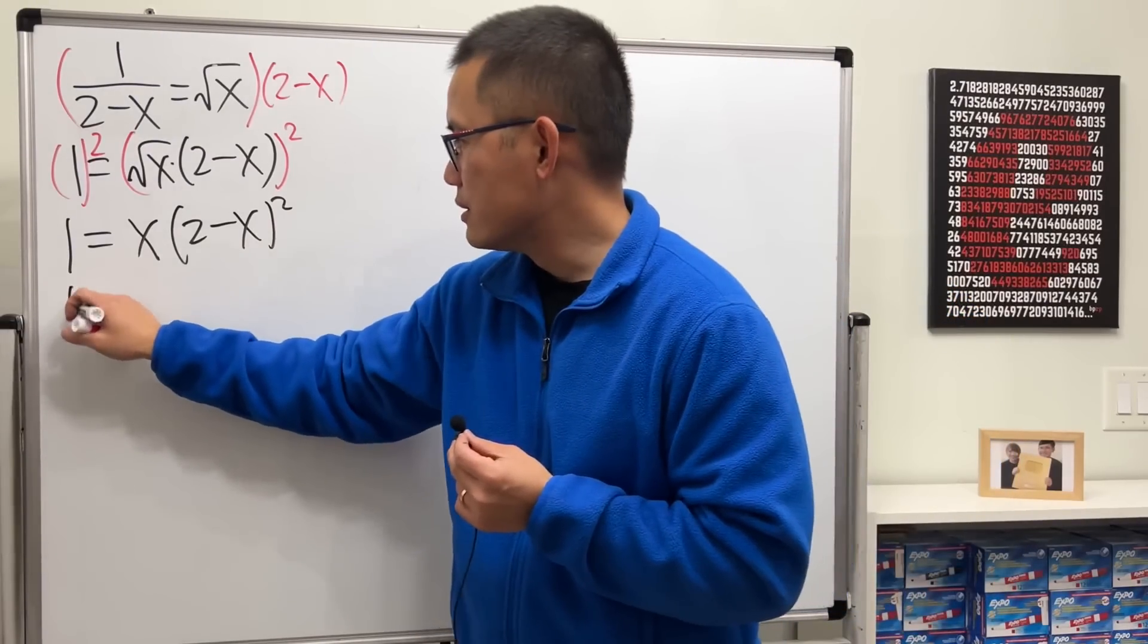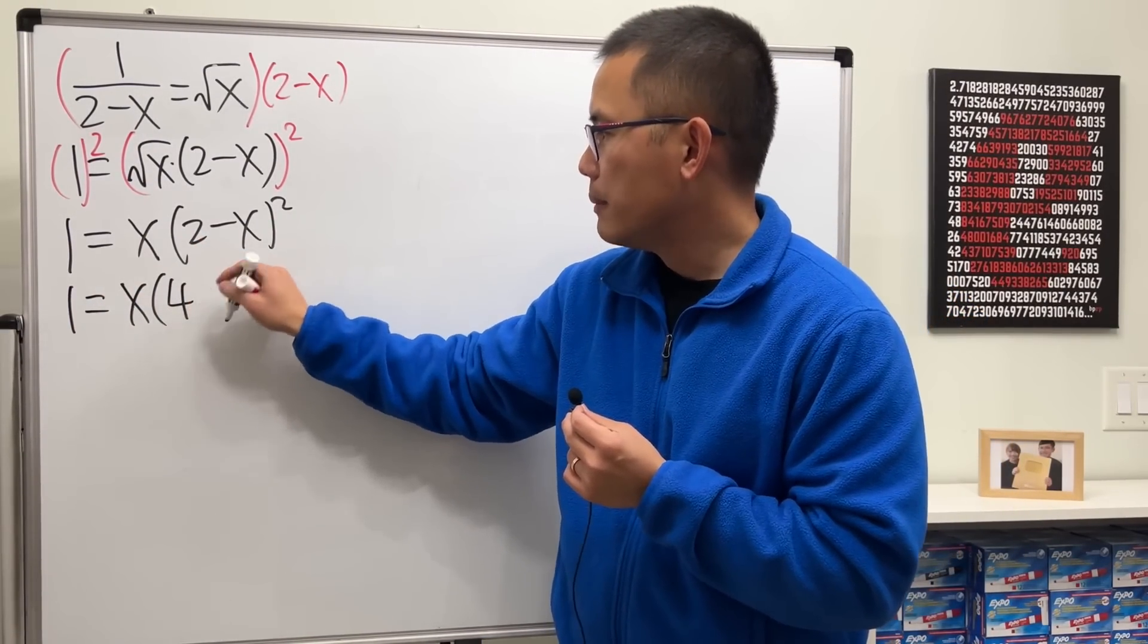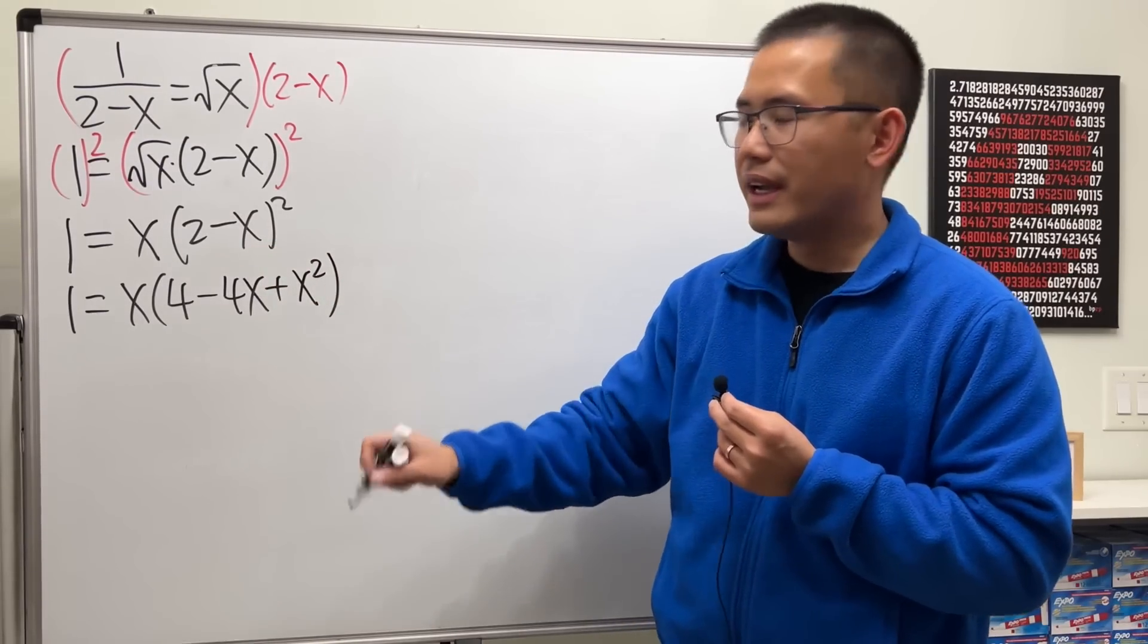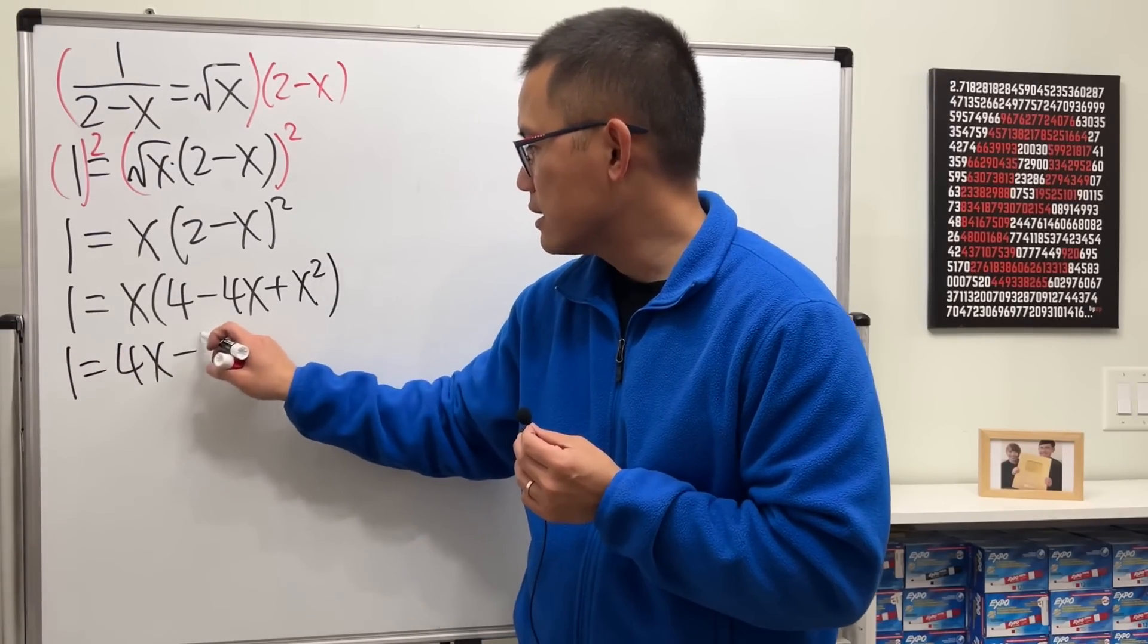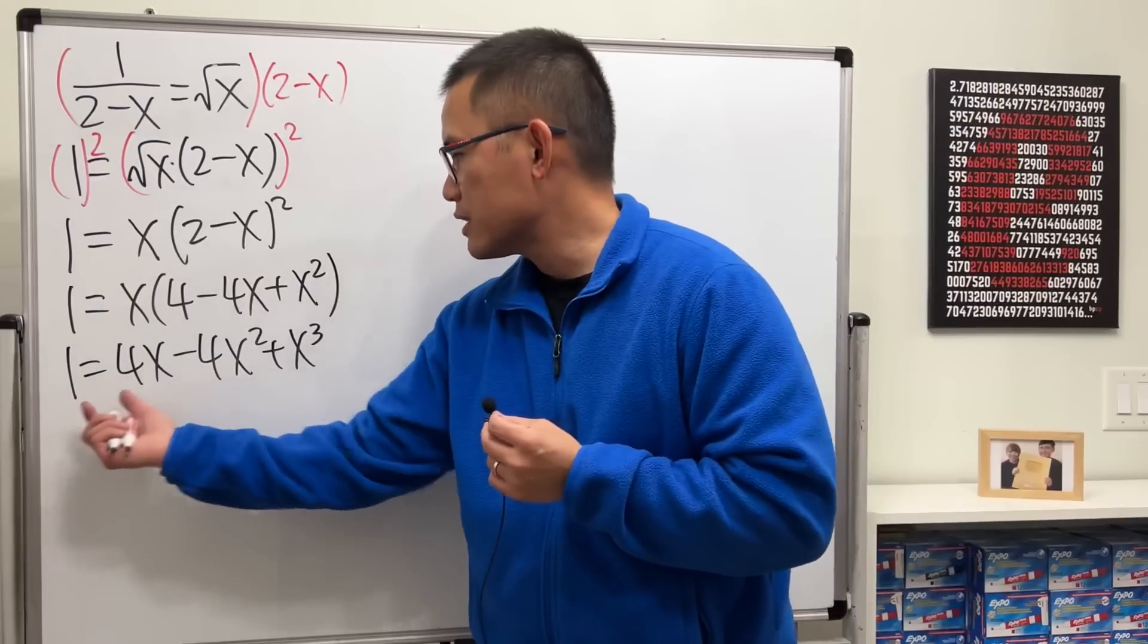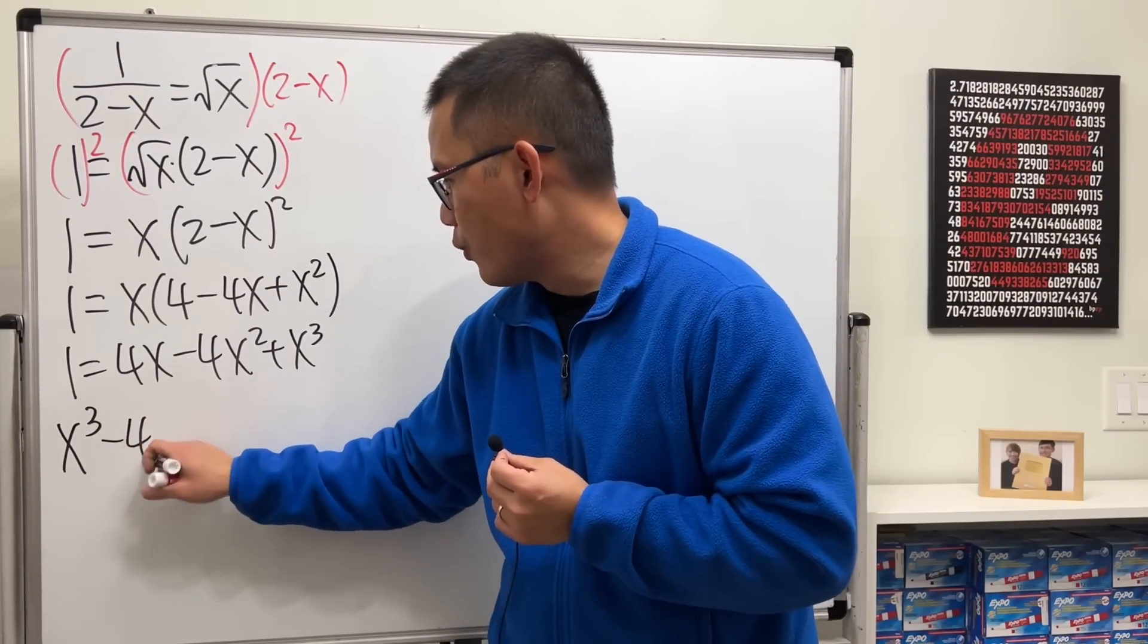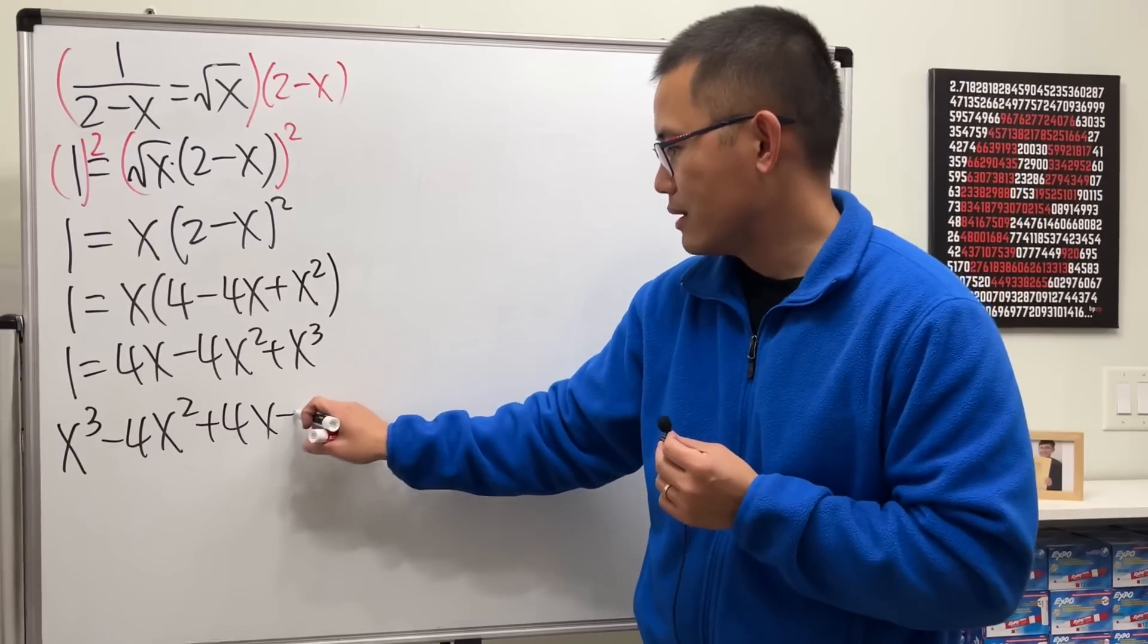Work this out. So this is 1 equals x times, square this, which is 4, minus 2 times this and that. So we have 4x here. And then plus x squared. And then I will distribute the x. So 1 equals 4x minus 4x squared plus x cubed. Lastly, minus 1 to both sides. And I will write this down first with x cubed going first. So x cubed minus 4x squared and then plus 4x minus 1. It's equal to 0.